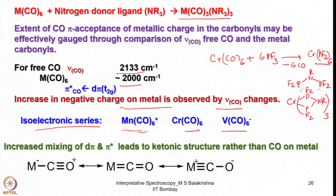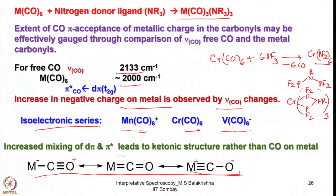When backbonding is moderate, the M–CO bond resembles a typical metal-carbonyl. As backbonding increases it becomes more ketonic in character, and with extensive backbonding a carbene-like extreme is approached. The stretching frequencies illustrate this: for Mn(CO)₆⁺ it is 2096 cm⁻¹, and for Cr(CO)₆ it is around 2000 cm⁻¹. As electron density on the metal increases, the CO stretching frequency decreases due to greater population of the π* orbital — a metal-to-ligand charge transfer effect.